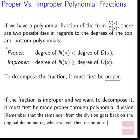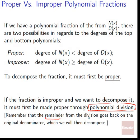If the fraction is improper, we have to turn it into a proper one through polynomial division. We make that numerator smaller by dividing. Remember, when you divide through polynomial division, the remainder from the division goes back onto our original denominator, which we will then decompose. The other part that comes out cleanly is just a polynomial that gets added to whatever comes out of the decomposition. We'll see an example of this in example 3.